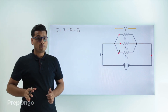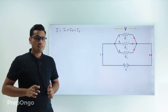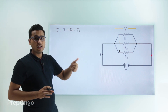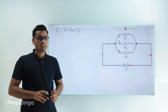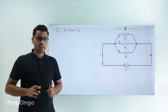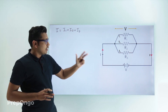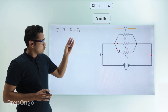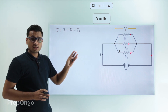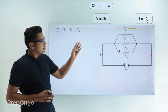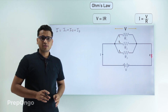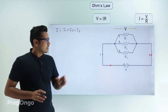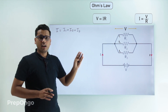Now we can apply Ohm's law for resistances R1, R2, and R3 to find the currents I1, I2, and I3 in terms of R1, R2, and R3. Ohm's law is V = IR, so to find I we rearrange to I = V/R. Let's apply Ohm's law for R1, R2, and R3.